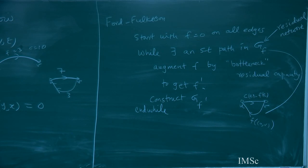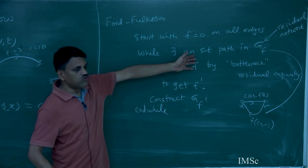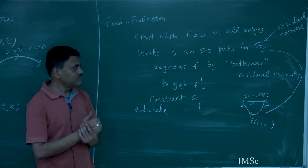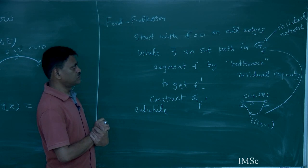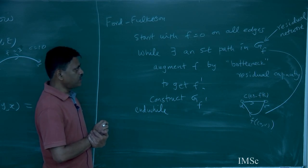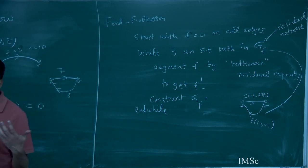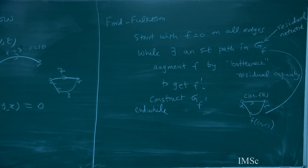This is Ford-Fulkerson. When does it stop? As long as you don't find an ST path in the residual network. And why is it correct? When you stop, why have you achieved the maximum possible flow? It will satisfy the constraints — but when you stop, why have you achieved the maximum possible flow?